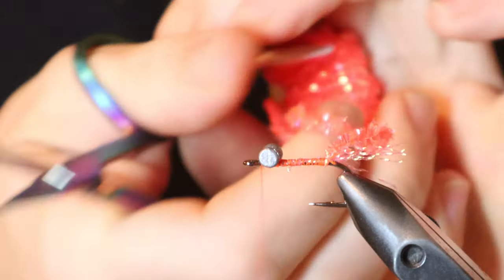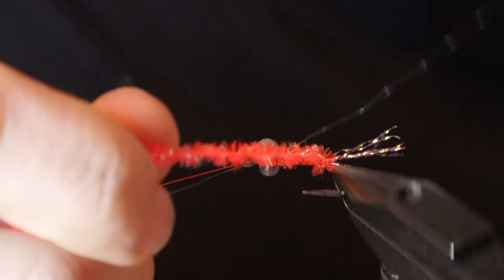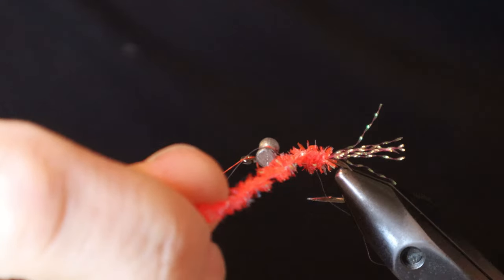Once that's tied in, you're just going to wrap it to the front of the hook. I like to leave my chenille on the card or in the bag that way you don't have to try and guess the length and you won't waste any material.